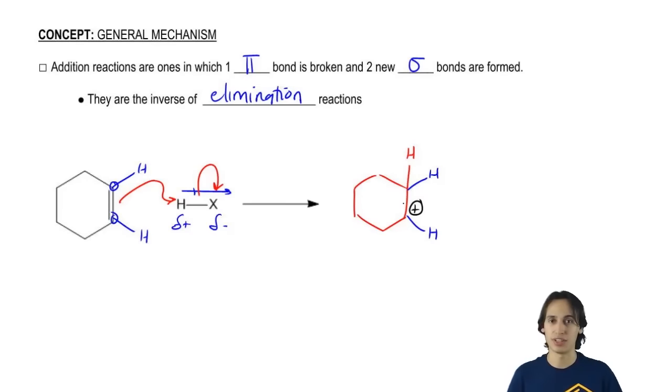So now I've got this carbocation and I'm trying to figure out what to do with it. Is there anything that it could react with? Yes. Well, check it out. I've actually got an X minus hanging around. I've got a spare anion. So where do you think this next arrow is going to come from? The X and I'm going to go ahead and attack the carbocation.